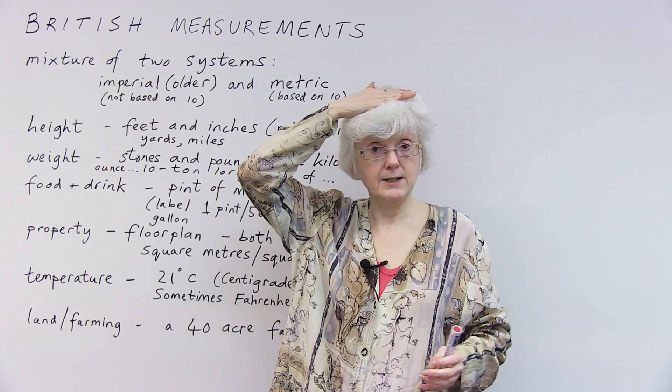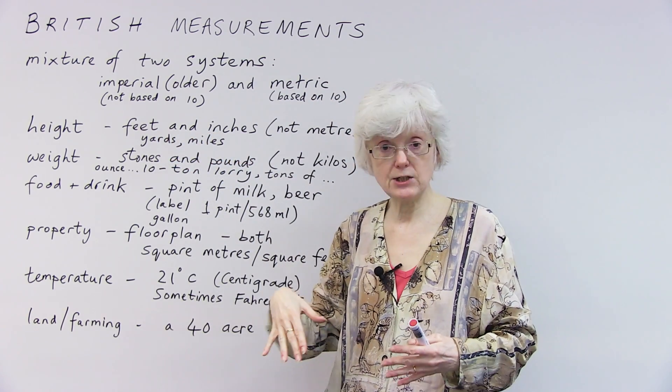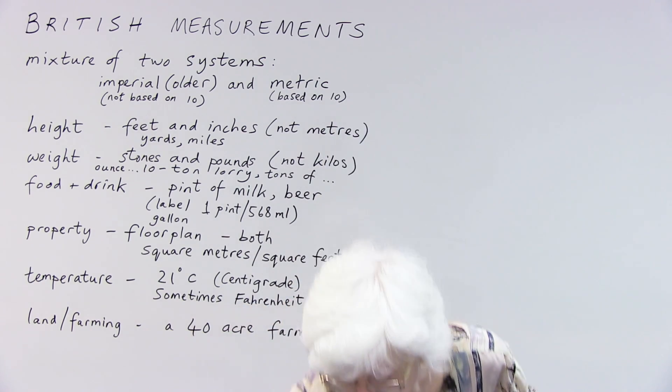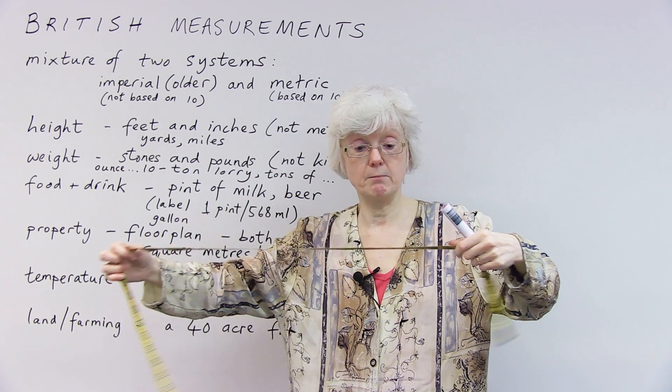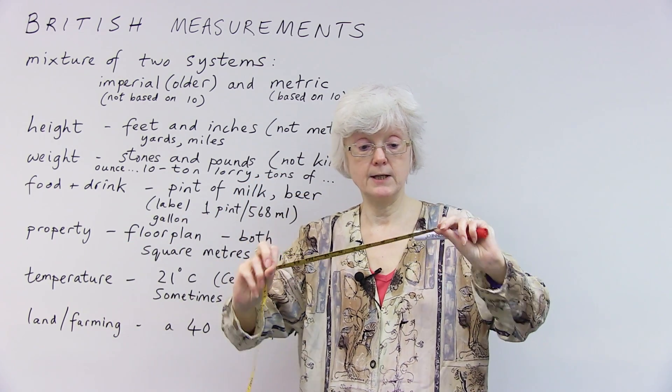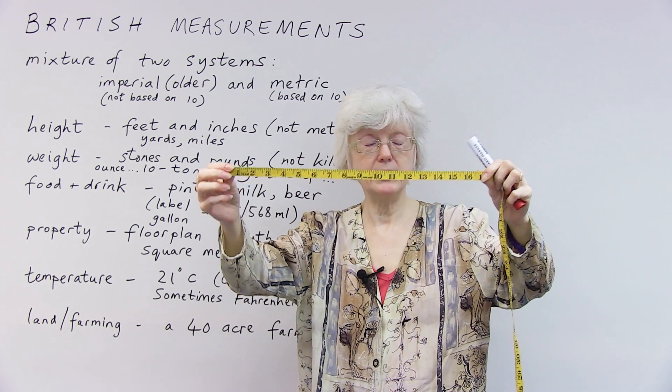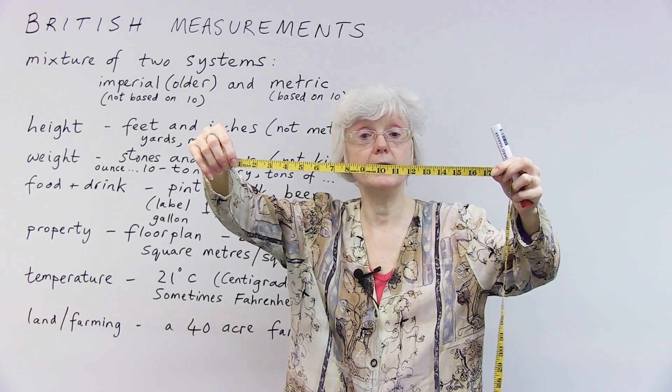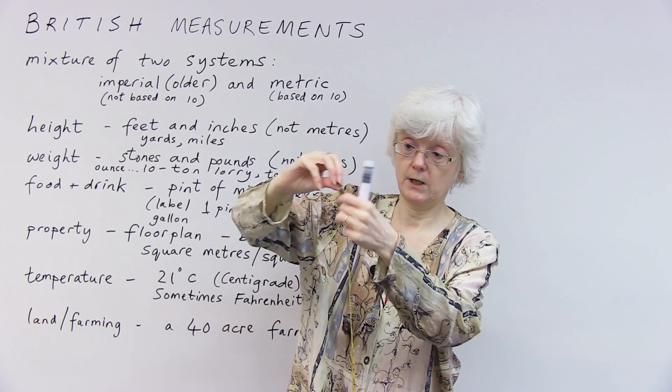So let's just start by looking at height. So my height would be measured in feet and inches. Now, I've got a tape measure here. It's quite an old tape measure. And it's marked on both sides. And these are inches. So where you can see one, two, three, four, five, six, going across, those are inches.